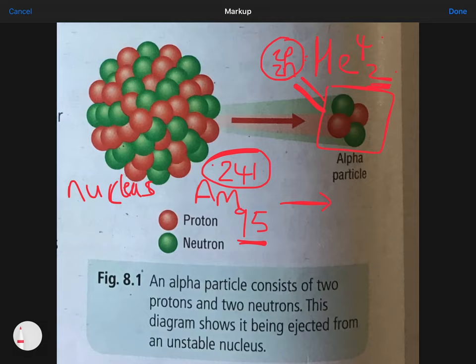An alpha particle, two protons and two neutrons, is the same thing as a helium nucleus. When the Americanum 241 emits an alpha particle, what's happening to the mass number? If it's giving off two protons and two neutrons, the mass number would decrease by four. When you take four from 241, you're going to get 237. It's four particles going from the nucleus, so it's decreasing by four.